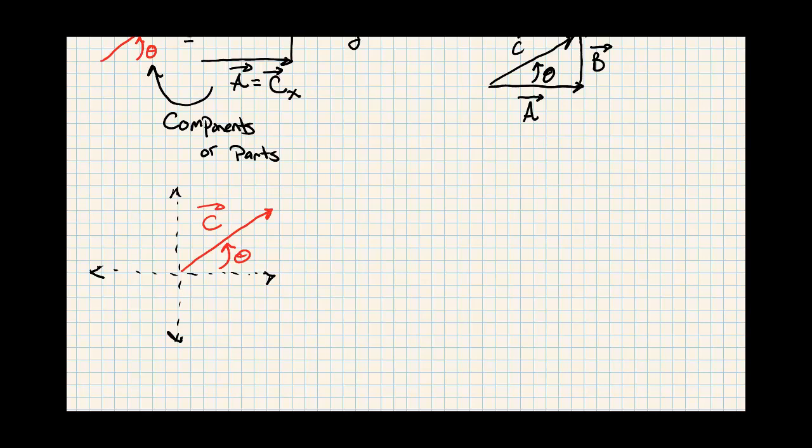What are the horizontal parts? Horizontal portion. The Cx. And what is the vertical portion? The upward portion of that vector C. Cy.